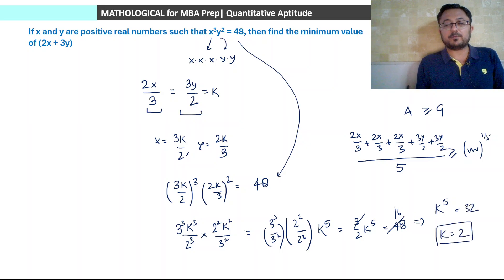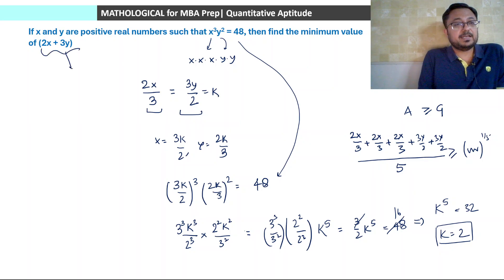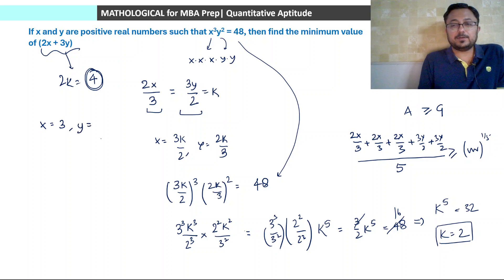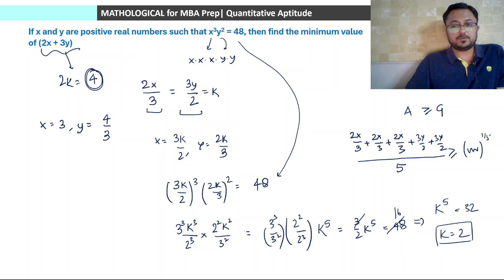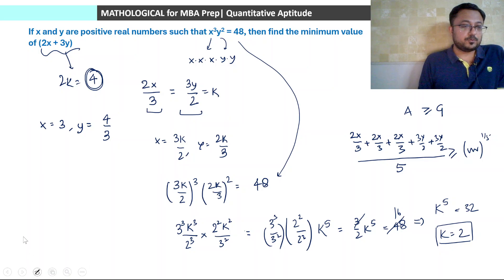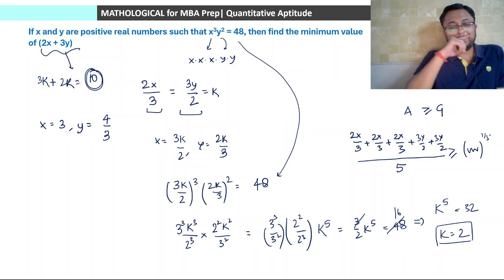Since 2 to the power 5 is 32, k equals 2. Then 2x plus 3y equals 5k, so the minimum value equals 5 times 2 which is 10. We can also verify: x equals 3k by 2 equals 3, and y equals 2k by 3 equals 4 by 3.